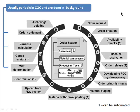There could be variance calculations — for example, your planned cost for the order was X, your actual cost was Y, so there's a variance and some analysis about that variance. Then there's order settlement, which is settling the costs incurred by the order. We'll see a little more detail on this shortly.